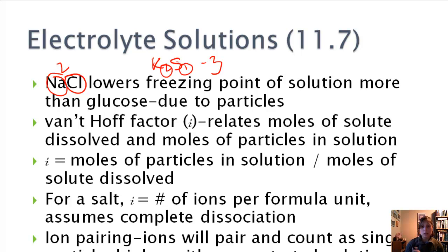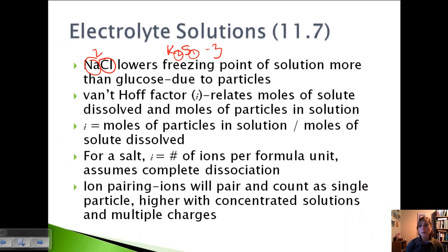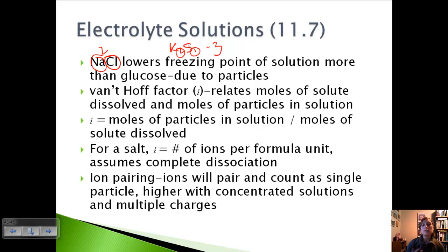We said we were assuming complete dissociation. That is not always going to be the case. Salt, instead of being twice as effective, it's like 1.87. The reason for that is because of what's called ion pairing. Some of the ions will pair and count as a single particle. This happens mainly with more concentrated solutions and where we have multiple charges on ions.